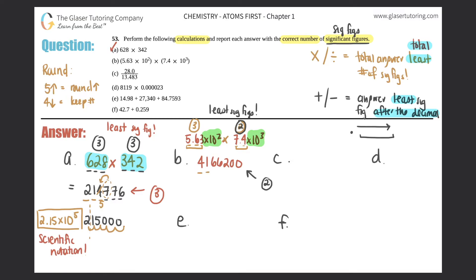Taking the first two sig figs: 4 and 1. The next digit is 6, which is 5 and above, so 1 rounds up to 2, giving 42. With five placeholder zeros, the answer is 4,200,000. In scientific notation: 4.2 × 10⁶. That's part b.